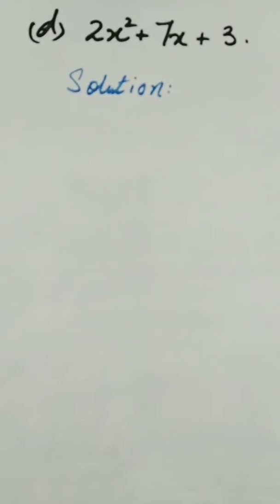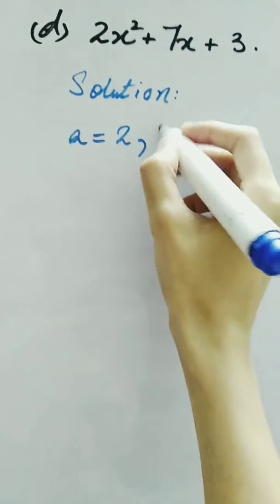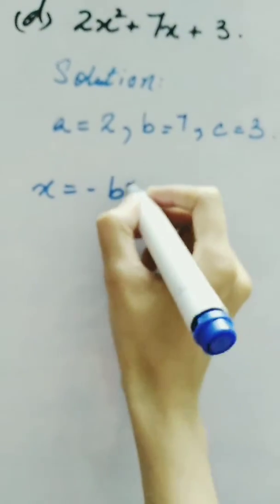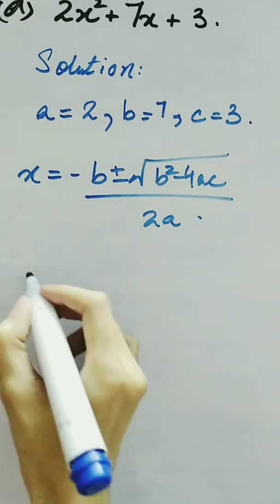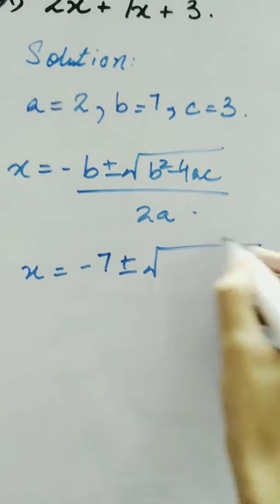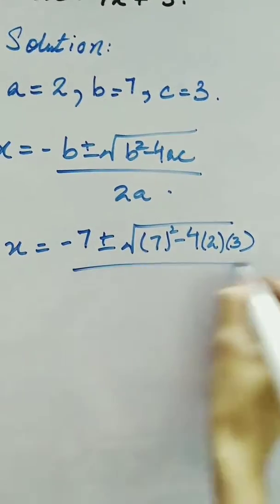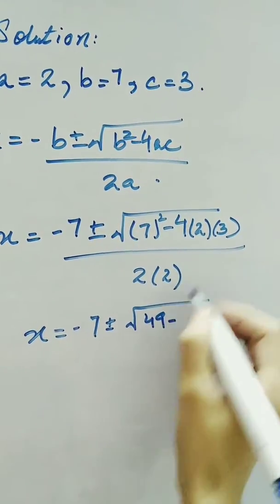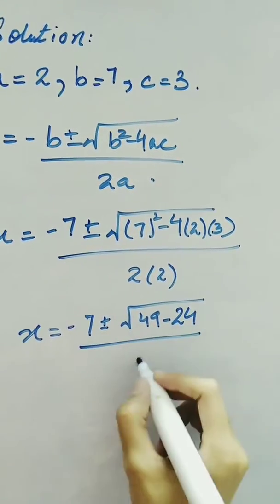Now we have another question: 2x squared plus 7x plus 3. Here a is 2, b is equal to 7, and c is equal to 3. Using the formula minus b plus minus under root b squared minus 4ac over 2a, and substituting, we have minus 7 plus minus under root 7 squared minus 4 times 2 times 3, divided by 2 times 2. So we have minus 7 plus minus under root 49 minus 24, divided by 4.